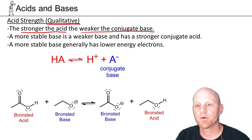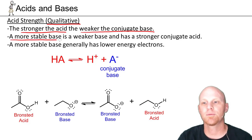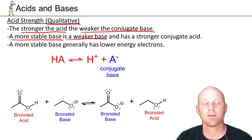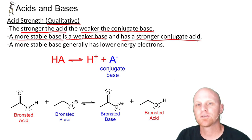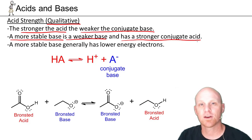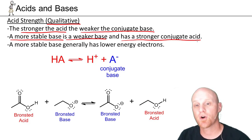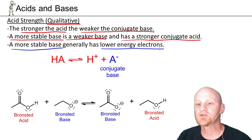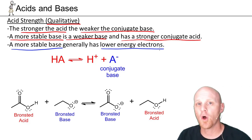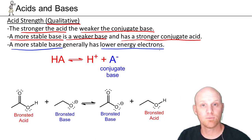A more stable base is a weaker base, and if it's a weaker base, it has a stronger conjugate acid. Ranking acids isn't always the easiest thing, but we usually rank acids by looking at their conjugate bases — whichever acid has a weaker, more stable conjugate base will be the stronger acid in any comparison. A more stable base generally has lower energy electrons. This is extremely important — one of the big understanding points in all of organic chemistry.